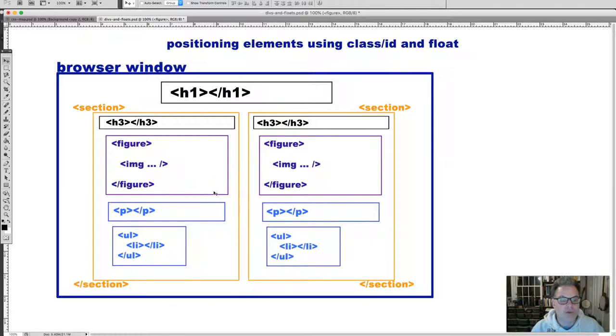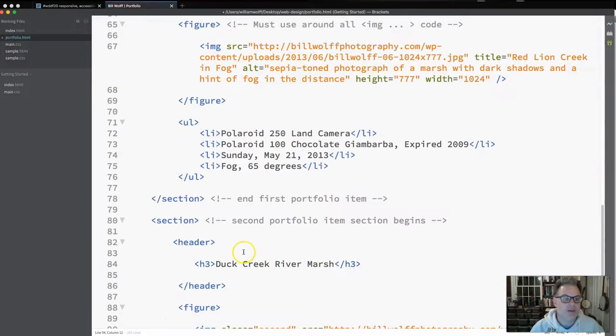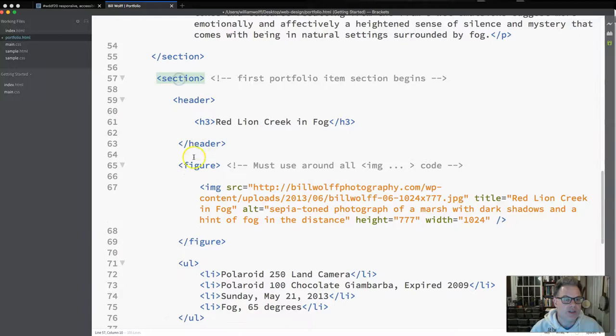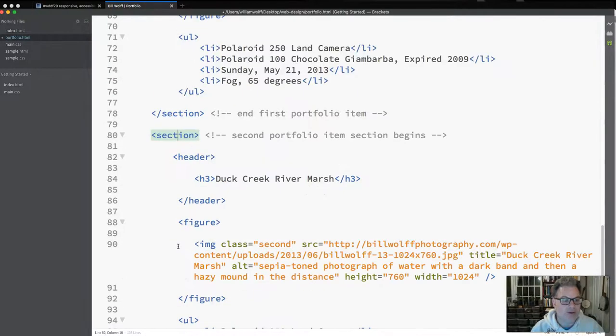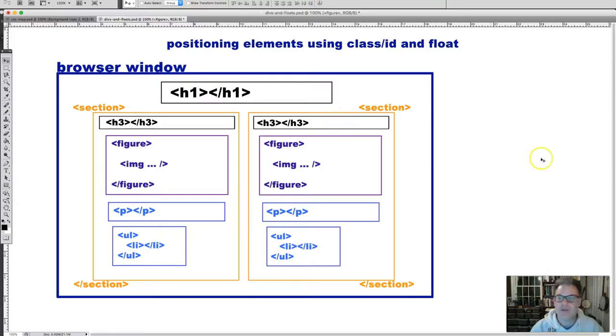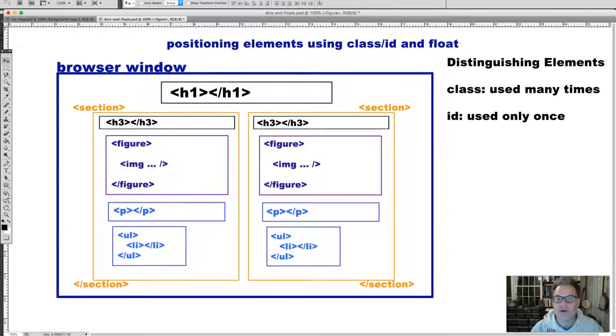Now the question becomes how do we get things to go side by side? How do we make them appear so that even though we have sections here that are coded just as section, how do we make one appear in one place and one appear someplace else? That is how do you provide them with unique representation or coding so that they behave differently when they are on the page?